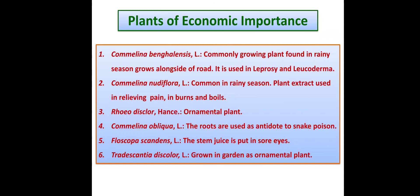Tradescantia discolor is also very important and very common. These plants are grown in gardens for their beautiful bright purple and pink colored flowers and violet colored leaves, making them popular ornamental plants. This concludes the plants of economic importance of family Commelinaceae.